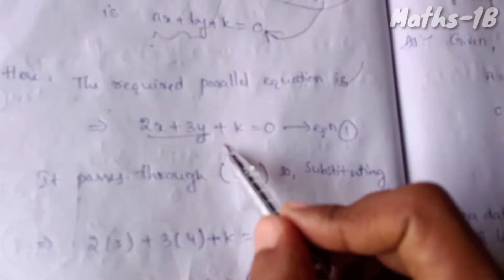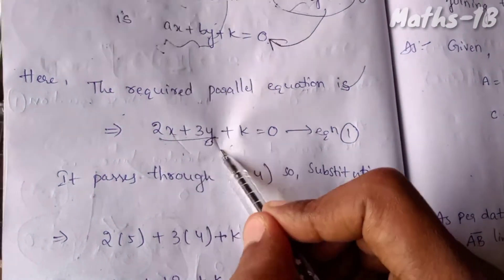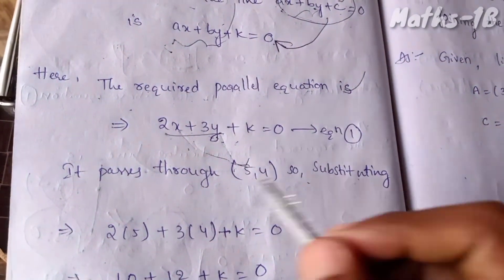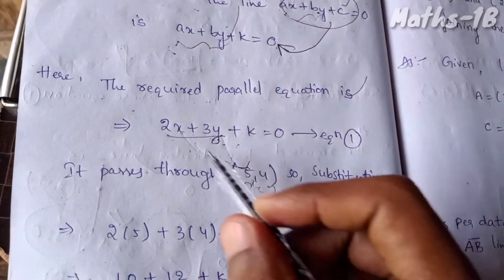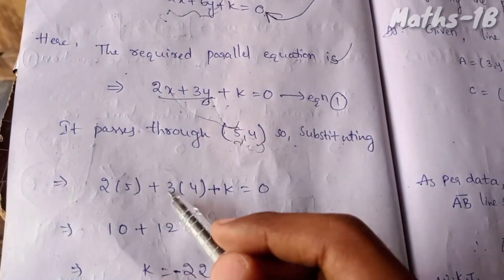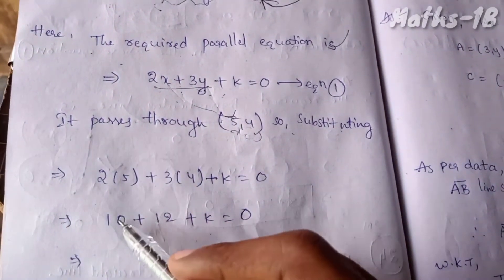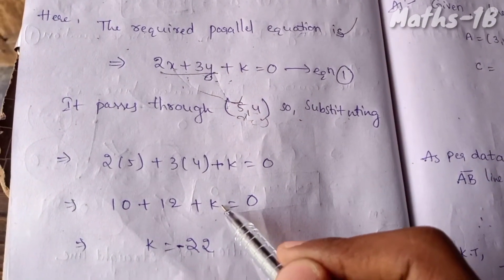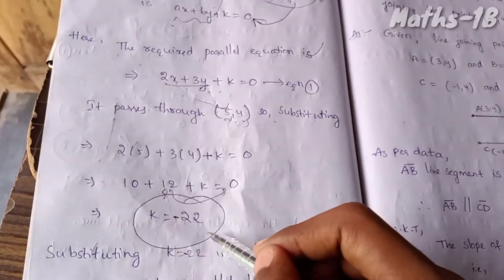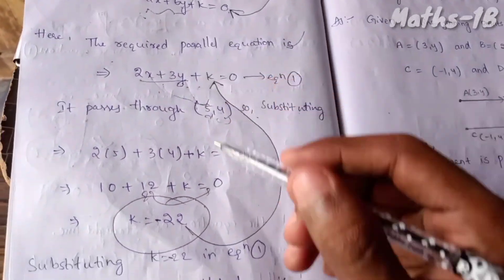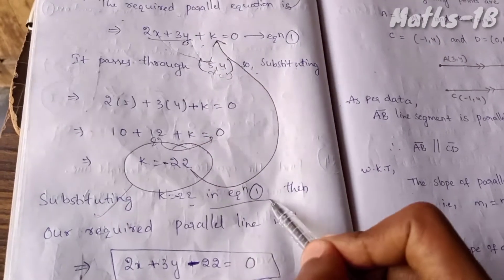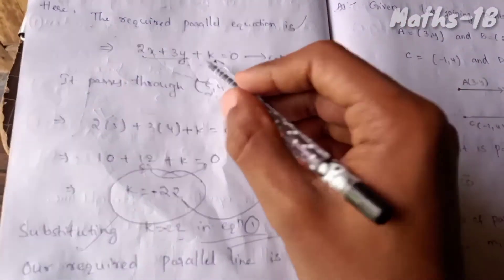Since it passes through (5, 4), we substitute x equals 5, y equals 4: 2 times 5 plus 3 times 4 plus k equals 0, giving 10 plus 12 plus k equals 0, so k equals minus 22. Substituting k equals minus 22 back into equation 1.